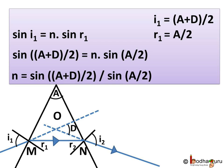Now we put the value of I1 and R1 in the equation and we get sin of half of A plus D is equal to N multiplied by sin of A by 2. Or we can say refractive index of the material of prism is sin of half of A plus D divided by sin of A by 2. Thus we can find the refractive index of a prism using this formula.